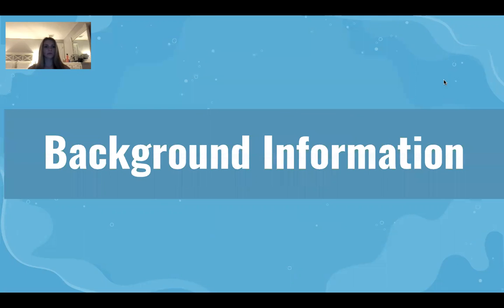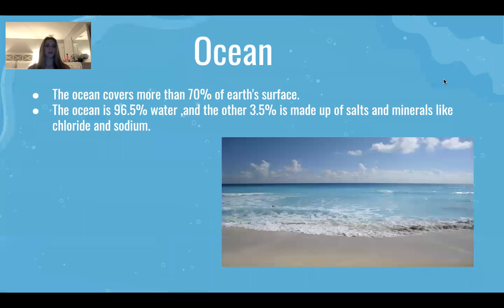Some background information: the ocean covers more than 70% of Earth's surface and the ocean is 96.5% water. The other 3.5% is made up of salts and minerals like chloride and sodium.